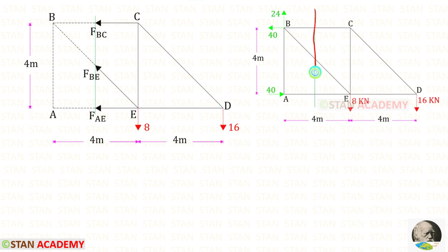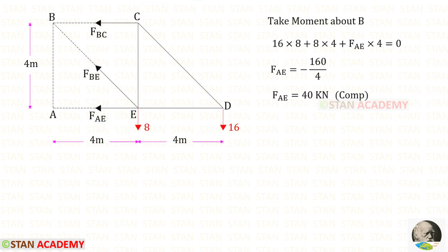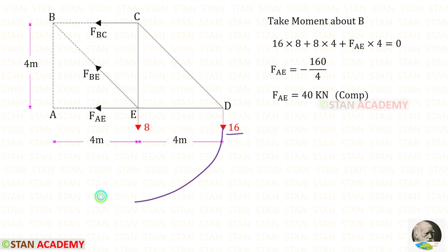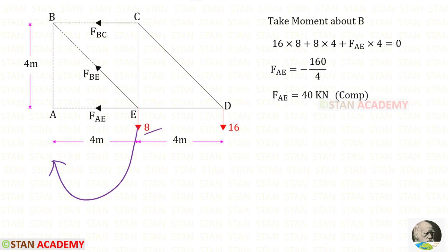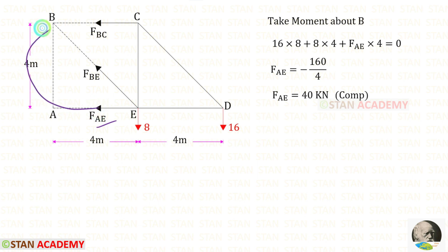Now I am going to make the third section like this, and I am going to take the right side portion and do the analysis. Let us take moment about B. When we take moment about B, we should not consider FBC and FBE. The remaining forces are 16, 8, and FAE. 16 is acting in the clockwise direction, so it will be positive and the distance is 8. 8 is acting in the clockwise direction, so it will be positive and the distance is 4. FAE is also acting in the clockwise direction, so it is also positive and the distance is 4. Finally, for FAE, we will get a negative value, meaning it is compressive.